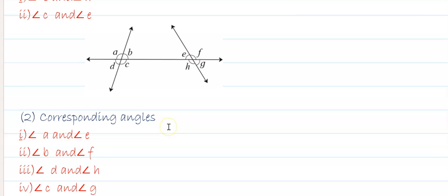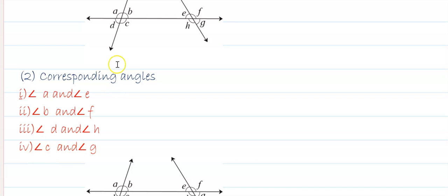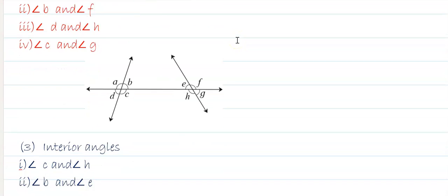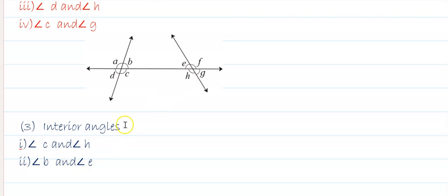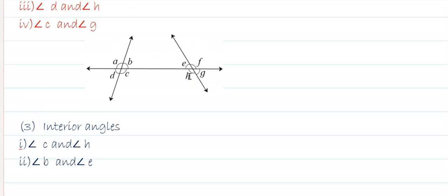The corresponding angles are: angle A and angle E; angle B and angle F; angle D and angle H; and angle C and angle G. The interior angles on the same side of the transversal are: angle C and angle H; and angle B and angle E. In this way, we have completed Practice Set 2.1. We will see more in the next video. Till then, goodbye.